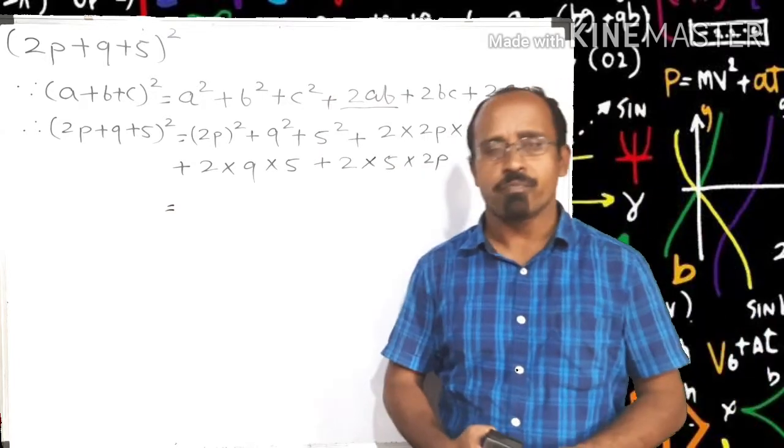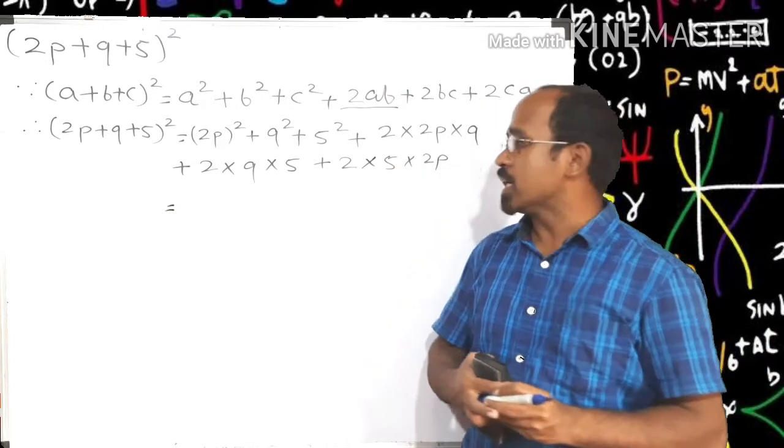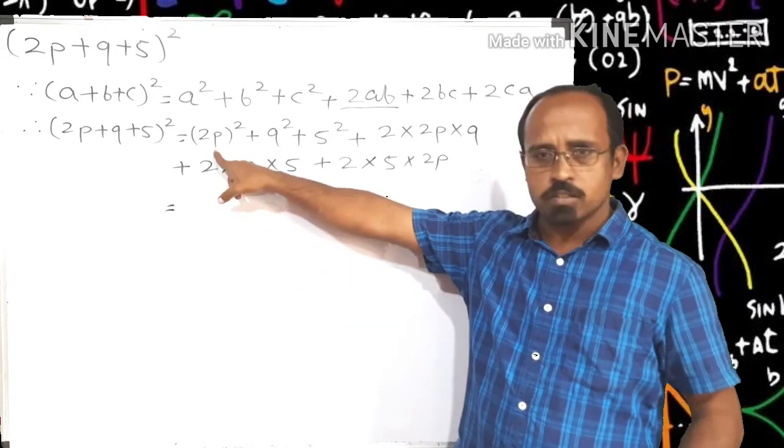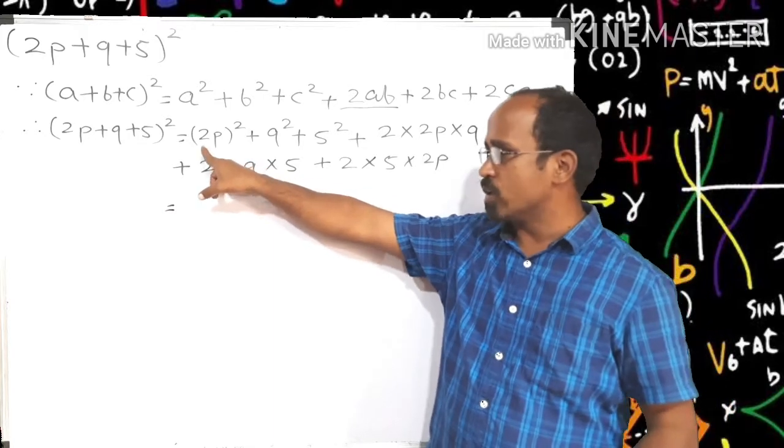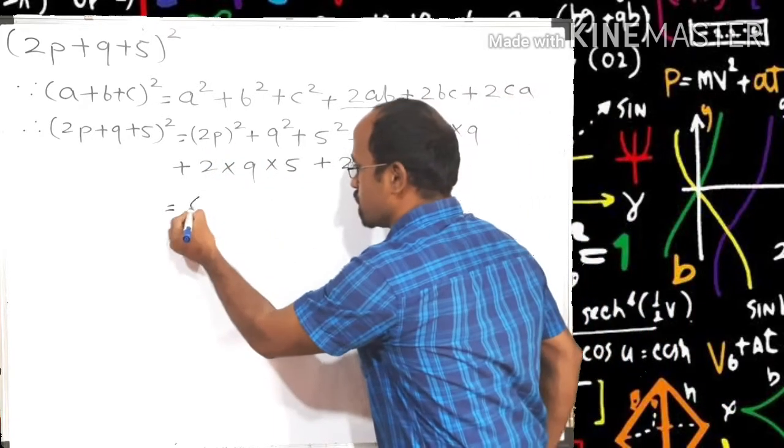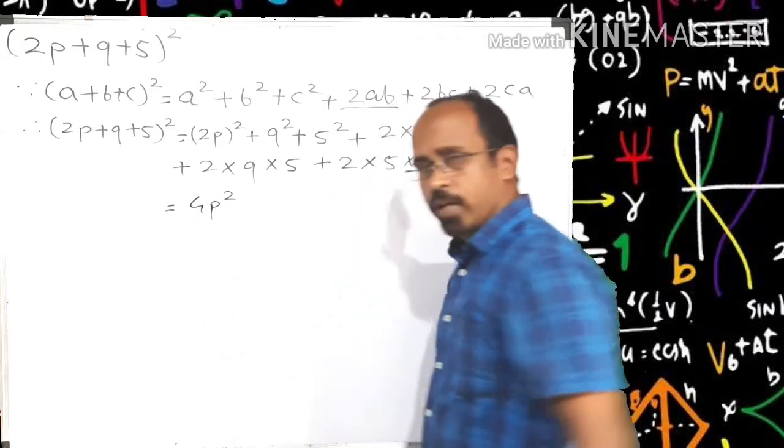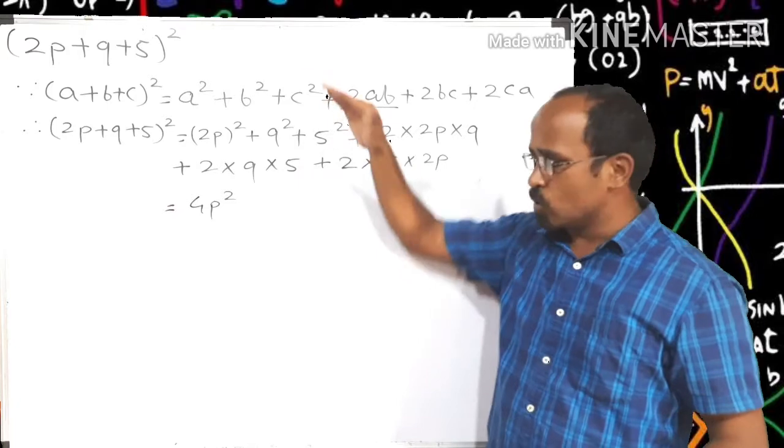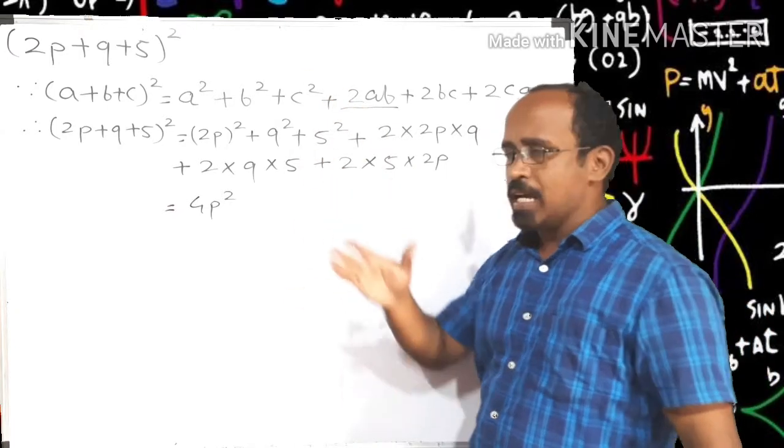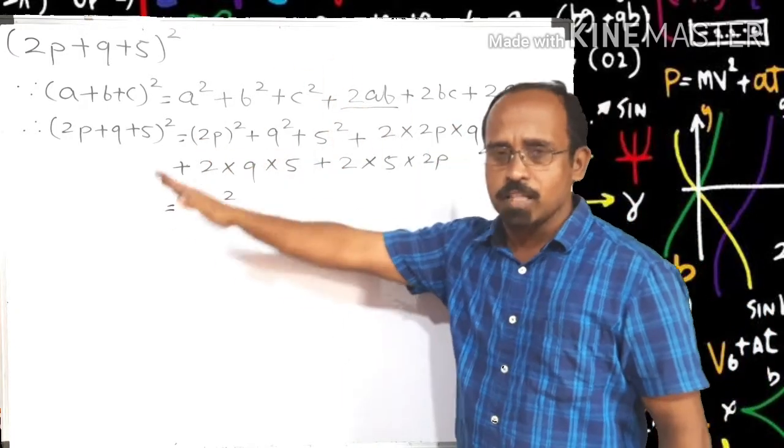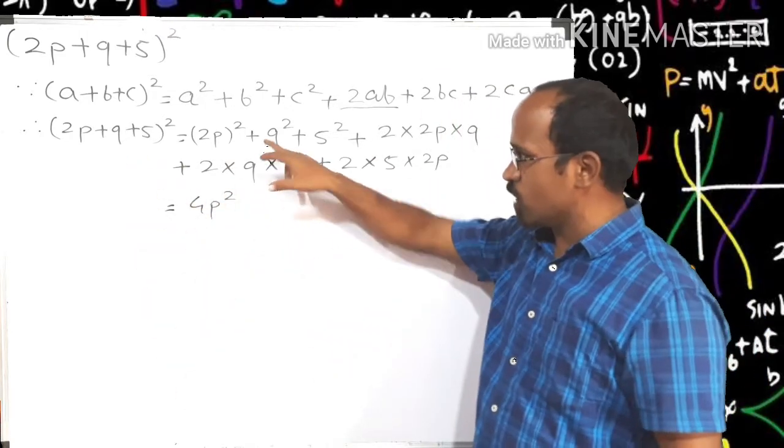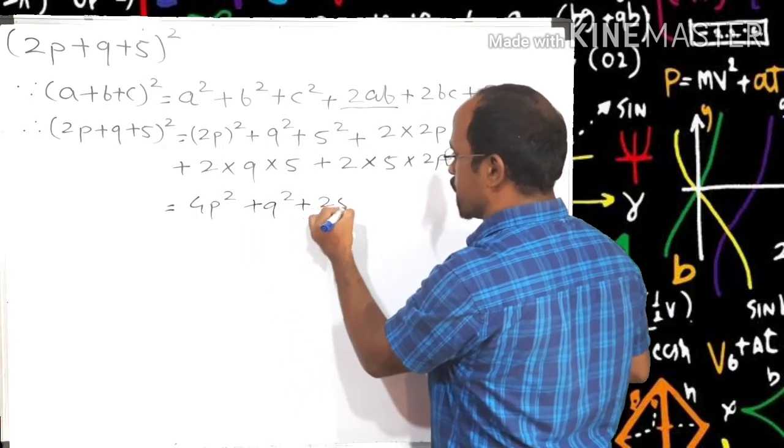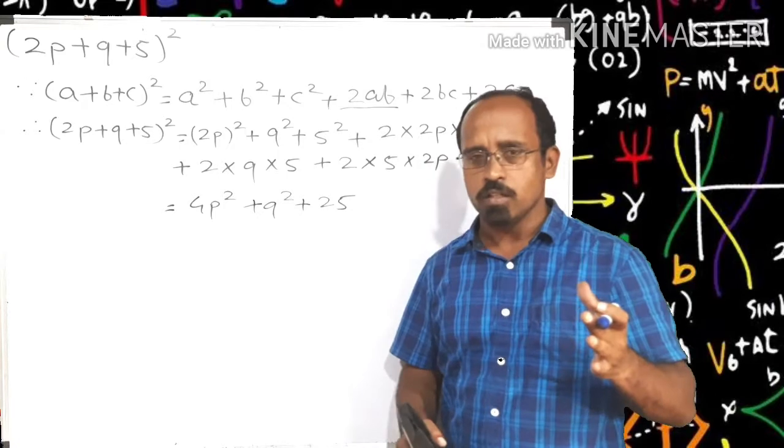So after writing the formula what is the next step? Next step is solve the given equation according to BODMAS. So first is bracket and next is order. First bracket contains order, let us solve it. 2p whole square is nothing but 4p². So bracket is finished. Then indices are just after the bracket, we can solve indices as well as multiplication simultaneously. So let's solve indices. q² which is plus q², 5² equals 25.